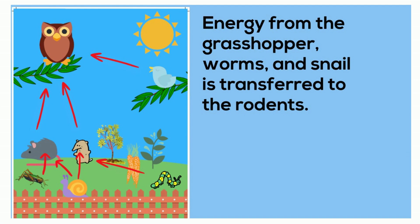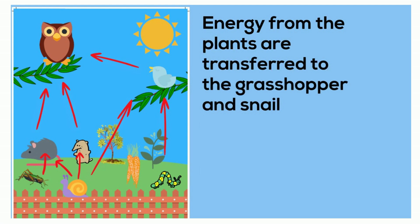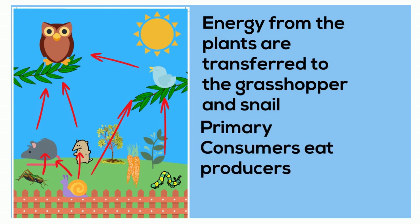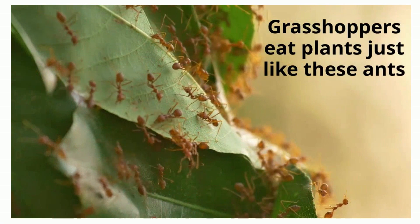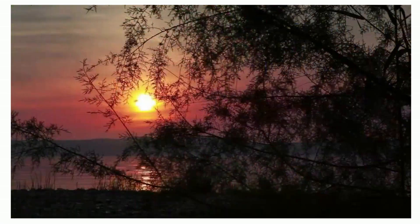Birds eat a larger variety of organisms including worms and snails. The birds and rodents are secondary consumers because they consume primary consumers. Grasshoppers and snails are primary consumers because they eat producers like carrots, leaves of trees, and plants. They are considered primary consumers because they consume mainly plants, which are the producers.